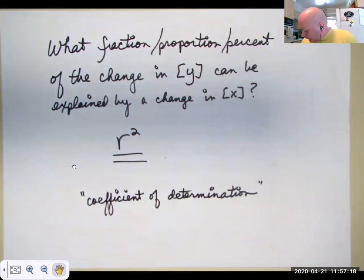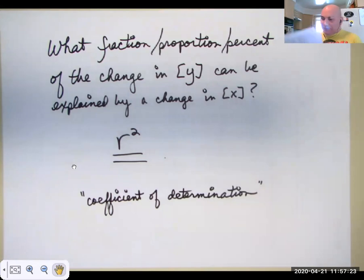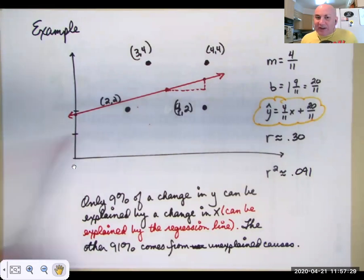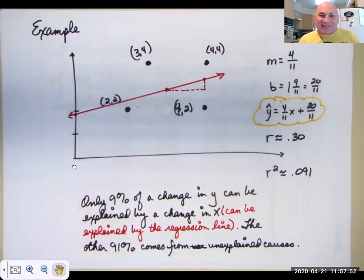So if we go back to the example I did previously, here it is. So if I were to ask, what percent of a change in Y can be explained by a change in X? Or what percent of a change in, or what proportion of a change in Y can be explained by the linear relationship of this data set? Or what fraction of a change in Y can be explained by this regression line? Those are all just different ways of asking the same thing. The answer is R squared. Approximately 9.1%.